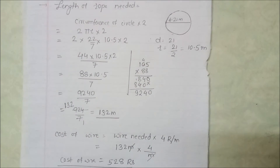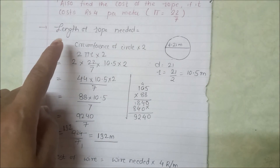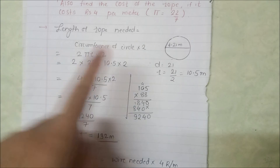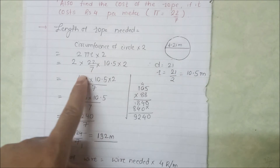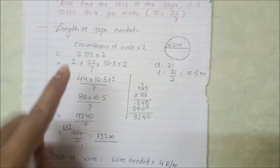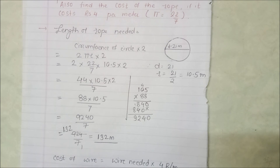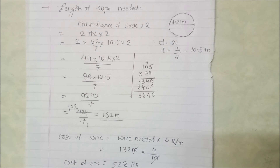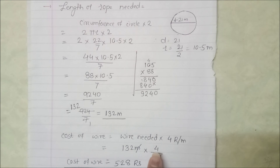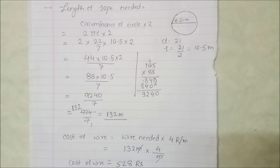इस तरह से इस question को solve करना है। पहले rope की total length निकाली — diameter से radius निकाली, circumference formula में put किया, double किया क्योंकि 2 rounds थे — answer 132 meter आया। फिर 4 rupees per meter से multiply किया तो ₹528 cost आई। Question Number 4 complete हुआ। Further questions अगले video में cover करेंगे। Thank you so much।